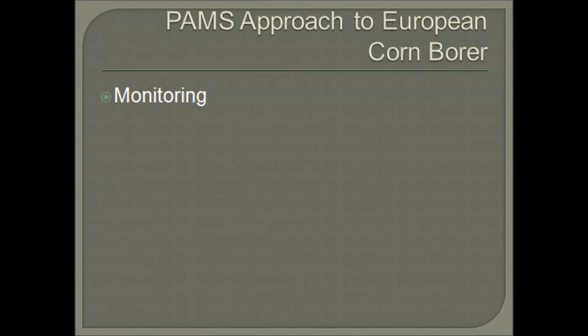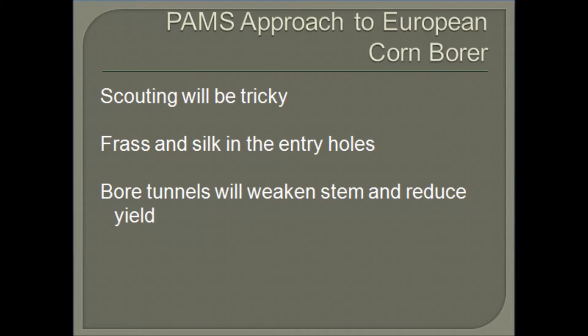Monitoring poses a new set of issues. The eggs of the insect are extremely small, so scouting will be tricky. Sweep nets will allow for identification of the moths. But the best way to know if you have European corn borers within a crop is to look for entry holes and for frass and silk at the beginning of the entry holes. Bore tunnels will weaken the stems and reduce the yields of the crop.